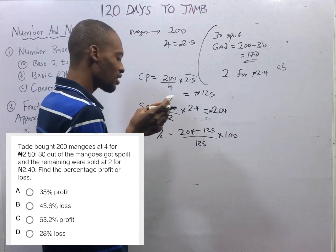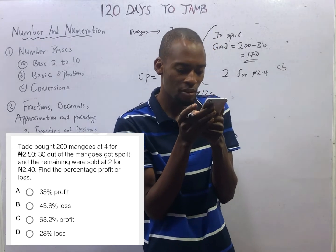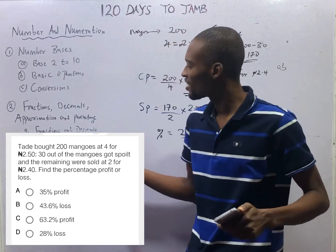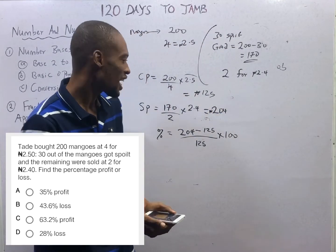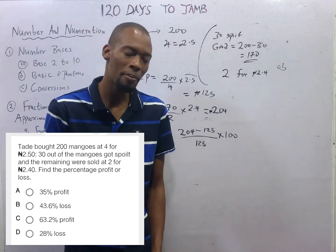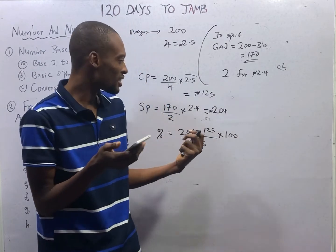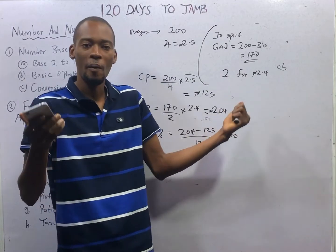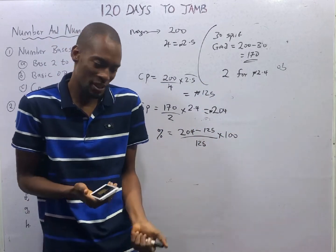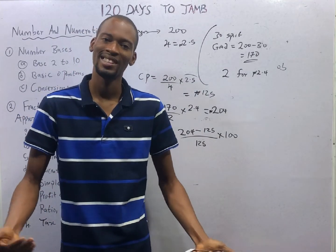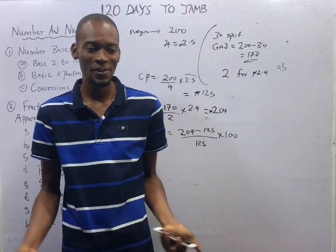Ladies and gentlemen, this brings us to the end of the class. Your assignment is from the Flash Nenas Jam app — go to question search, search percentage loss and percentage profit, and answer the questions that follow. If you have issues with any of them, reach me on my line or on my social handle. Thank you, see you in the next episode.